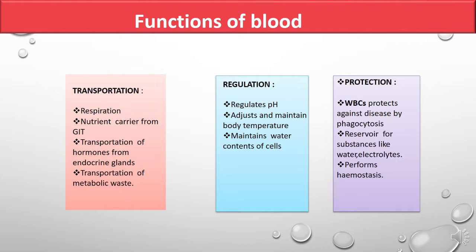Blood transports respiratory gases throughout the body. Blood also transports various nutrients from the gastrointestinal tract — after digestion, materials such as amino acids, glucose, glycerol, vitamins, and minerals are transported to each and every cell for their energy requirements. One more transport function involves hormones.